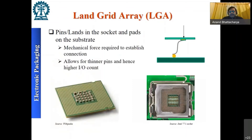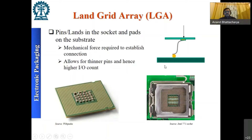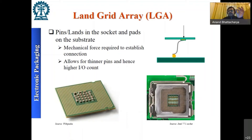Land grid array (LGA) is similar to PGA except the pins are on the socket side, not the package side. The package substrate has flat pads (lands) and the socket has spring-loaded S-shaped pins. When the substrate is placed on the socket and mechanical force is applied from the top, the lands and spring pins align and make contact. LGA lands are much thinner than PGA pins, allowing a higher interconnect density for the same area, though at higher cost.